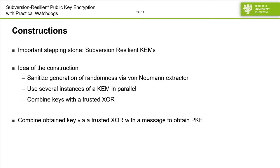Within this model, we showed how to construct subversion-resilient public key encryption. An important stepping stone is subversion-resilient key encapsulation mechanisms, or KEMs. The idea of our construction is that we will sanitize generation of randomness via the von Neumann extractor. With random coins available, we will use several instances of a KEM in parallel and combine the keys via a trusted XOR function. This forms a secure KEM, and from this we obtain subversion-resilient public key encryption by XORing the key with the message.